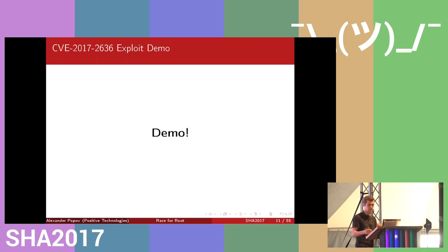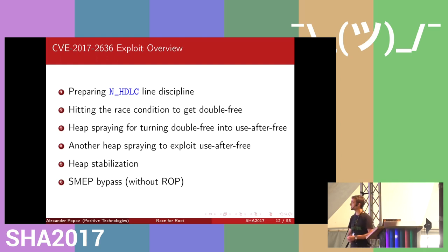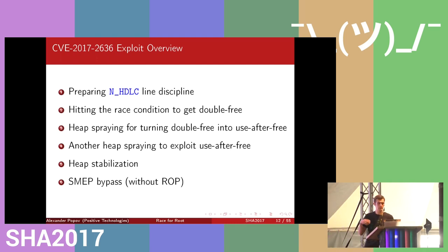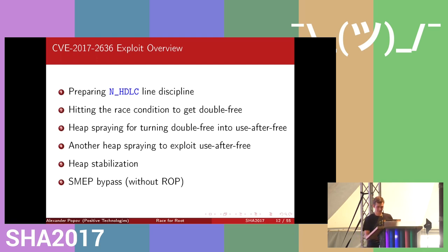Now I will describe the exploit step by step. The main steps are: first, prepare the environment for the race; second, hit the race condition and get a double free; third, heap spraying number one to turn the double free into use-after-free, which is exploitable; fourth, heap spraying number two to exploit the use-after-free; fifth, heap stabilization to return the system to its initial state. If we didn't hit the race condition, we start the exploit iteration again. Finally, I will show a new way to bypass SMEP without return-oriented programming.